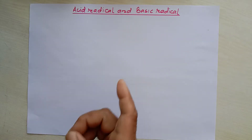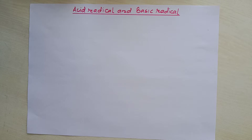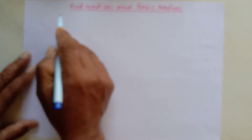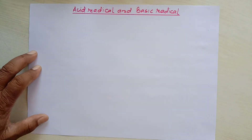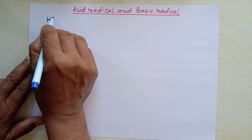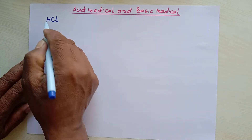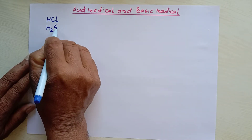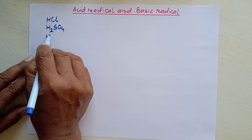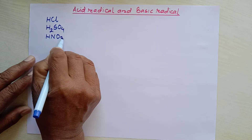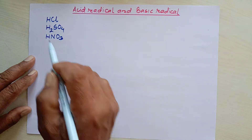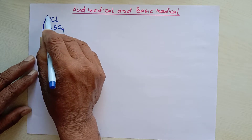Let's talk about acid radicals and basic radicals. Before starting acid radicals, let's talk about some acids we have to understand. HCl is the formula of hydrochloric acid, H₂SO₄ is the formula of sulfuric acid, and HNO₃ is the formula of nitric acid. These are the mineral acids which we use in the laboratory frequently.